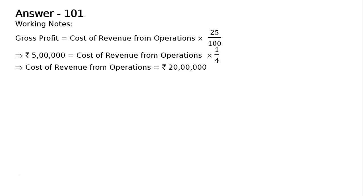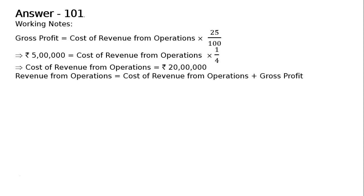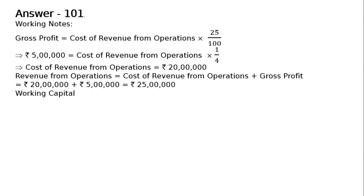If we cross multiply, cost of revenue from operations will be Rs. 20 lakhs. Now, revenue from operations equals cost of revenue from operations plus gross profit, that is Rs. 20 lakhs plus Rs. 5 lakhs, which equals Rs. 25 lakhs as the revenue from operations.